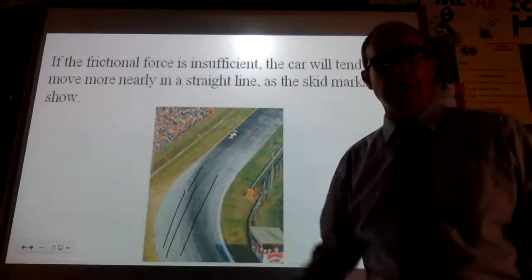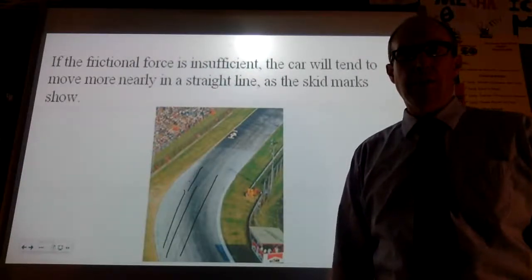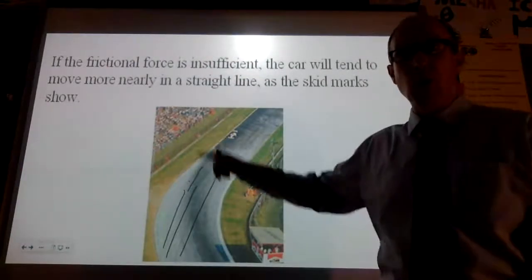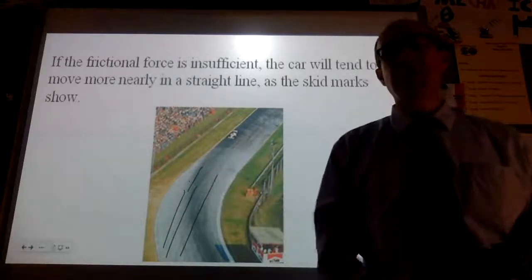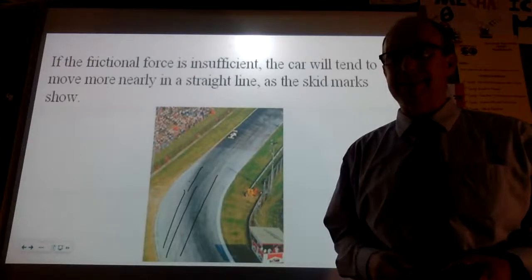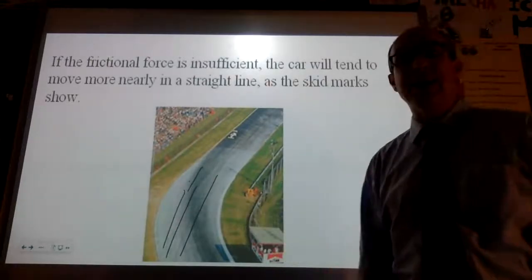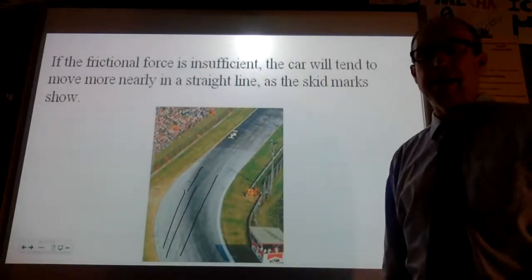So the car doesn't make it around the turn—it doesn't make it at all. Once it starts slipping, it goes in a straight line. Why? Because when it's rolling, it's static friction going towards the center. As soon as it starts slipping, it's kinetic, and that's less. So once it starts moving, you're not going to get it back.